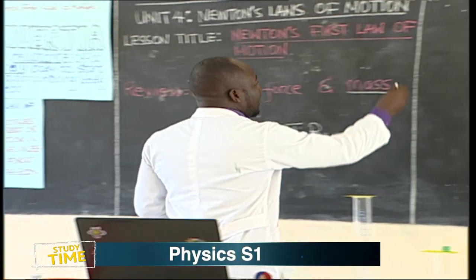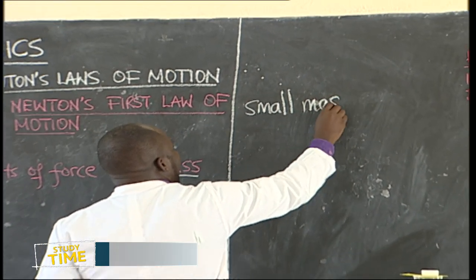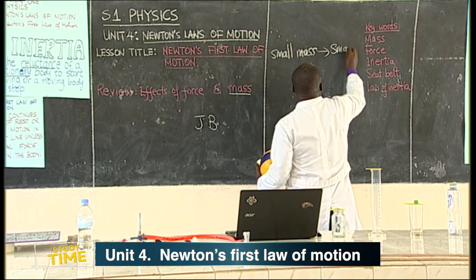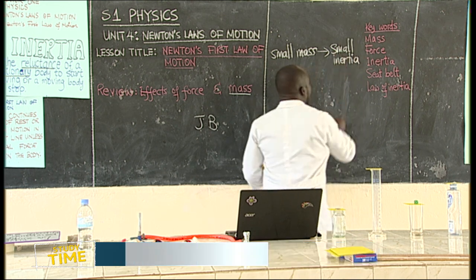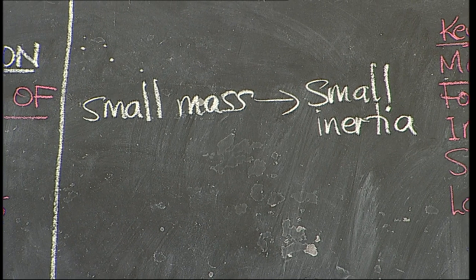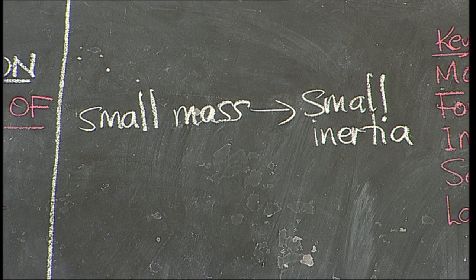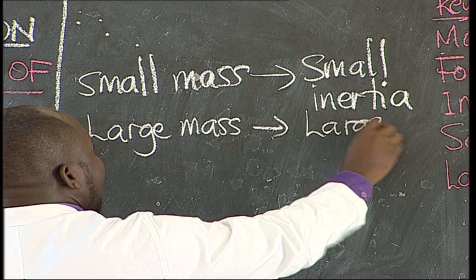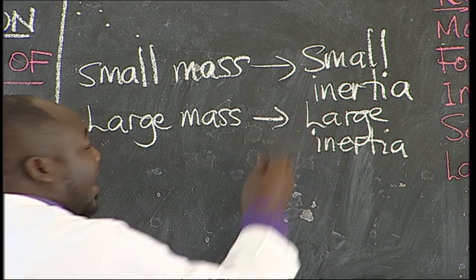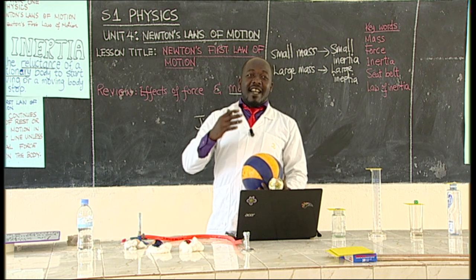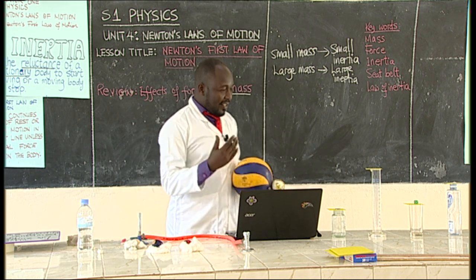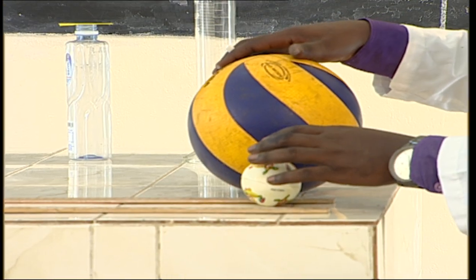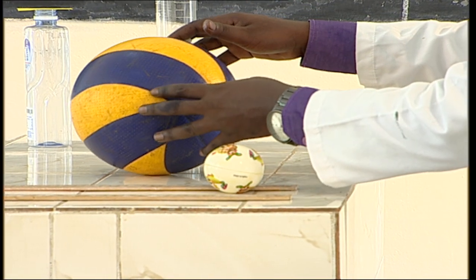So what does this mean? If an object has a small mass, it also has small inertia, which means it is very easy for that object to begin moving. If a body has a large mass, it also has large inertia, meaning it does not begin moving very easily. The same applies to stopping — a body that is hard to start moving is also very hard to stop.